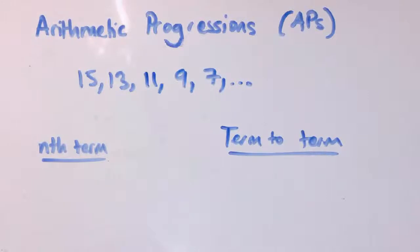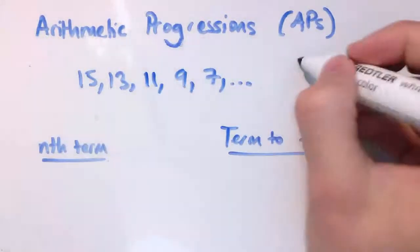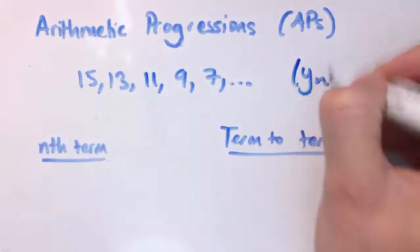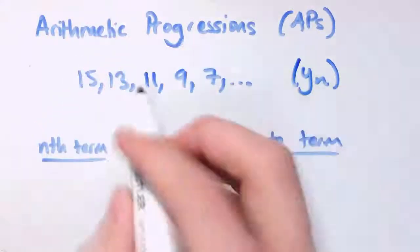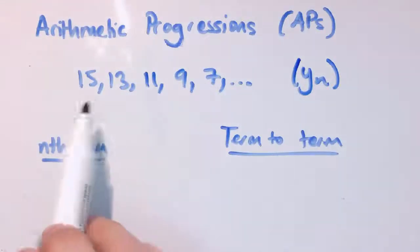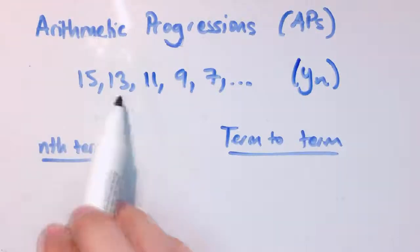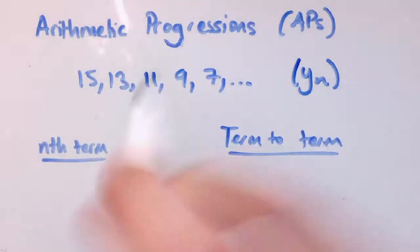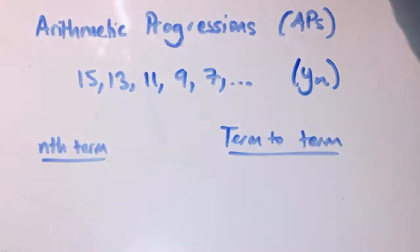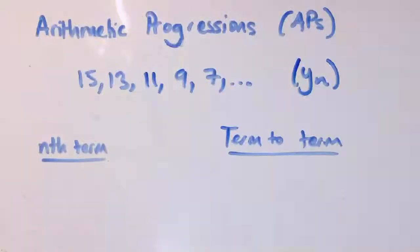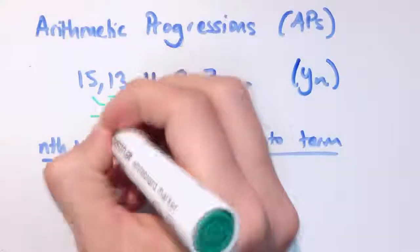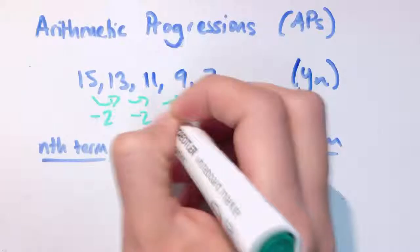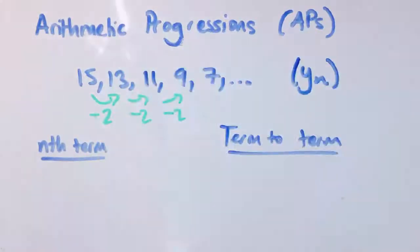Here's another example. Let's call this sequence y, so y_n. This sequence is 15, 13, 11, 9, 7. This time, rather than going up in twos, it's going down in twos, so from one term to the next it's minus 2, minus 2, minus 2.